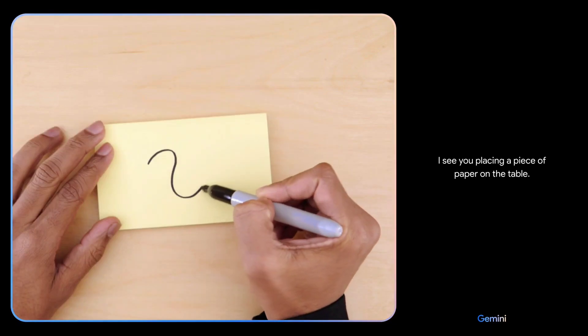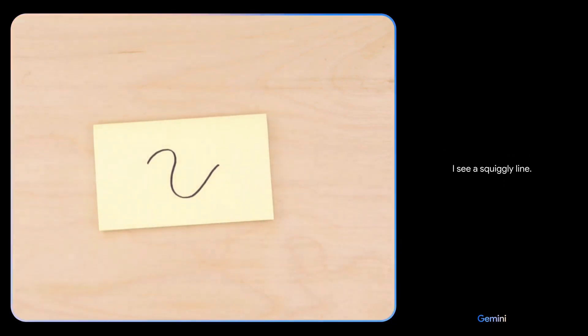All right, testing Gemini. Here we go. Tell me what you see. I see you placing a piece of paper on the table. I see a squiggly line.